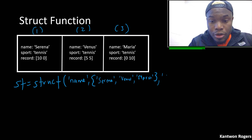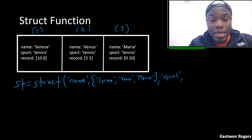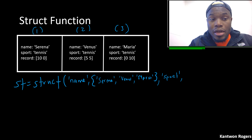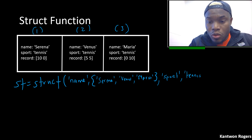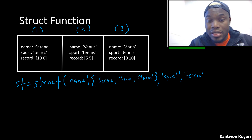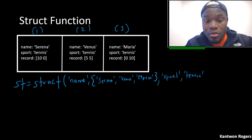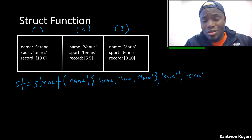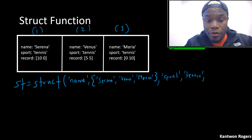Moving on — the next field is 'sport'. In this case everyone plays the same sport, so there are two ways to handle this. I could have a cell array with 'tennis', 'tennis', and 'tennis', or, since the struct function will apply a length-one value to all spots in the structure array, I can just say 'tennis' once and everyone will have that value. If I had a cell array with only two values while there are three names, MATLAB would error because it doesn't know what to do.